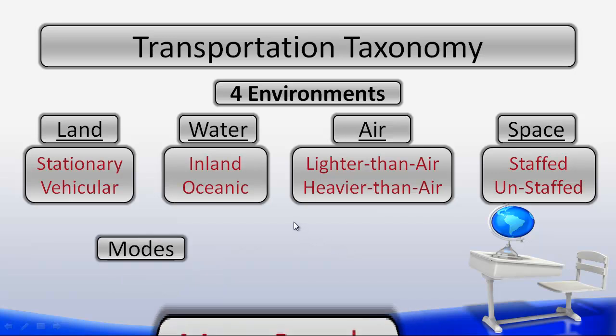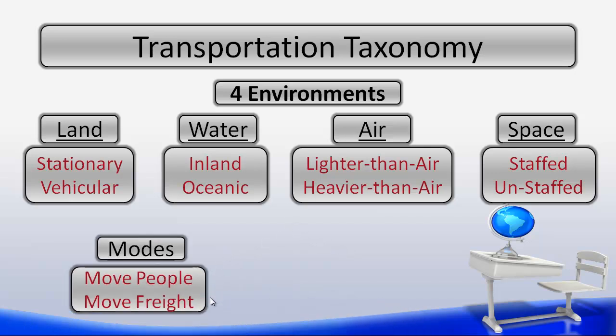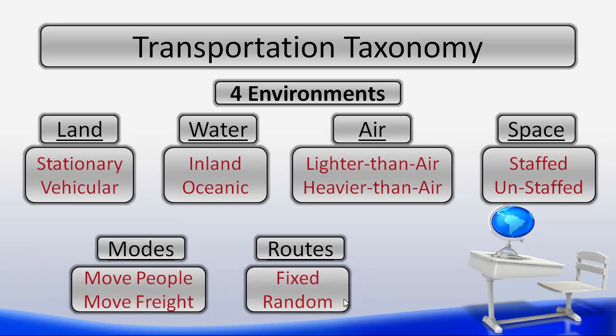In the taxonomy, we also have two modes, and these modes are to move people and to move freight. These will be done individually or as a combination. Then we have two types of routes. We have a fixed route, and we have a random route.